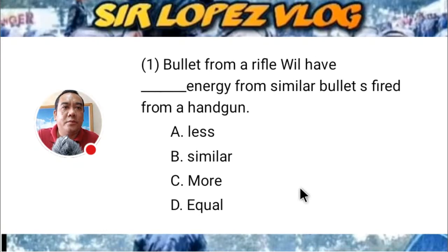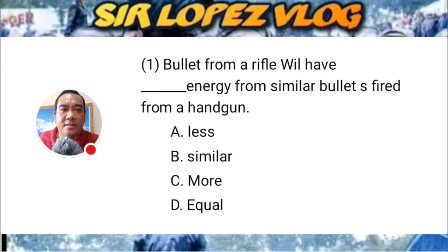Question number one: A bullet from a rifle will have blank energy from similar bullets fired from a handgun. Is it: A) plus, B) similar, C) more, or D) equal? What is the missing word to complete the sentence?